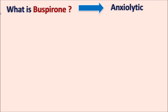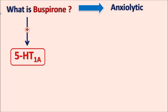Buspirone is a spiro compound — that's why we can observe 'spiro' within the name. This drug acts as a partial agonist at 5HT1A receptors. These 5HT1A receptors are autoreceptors which inhibit the release of 5HT. In this way, buspirone controls the release of serotonin, thereby controlling anxiety.